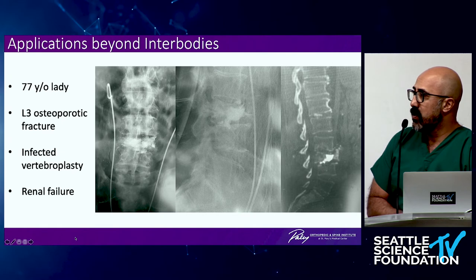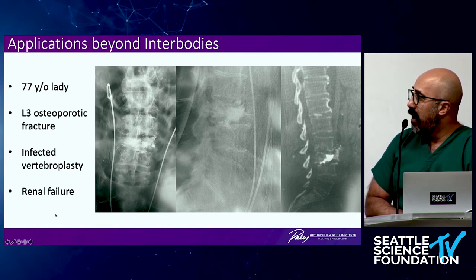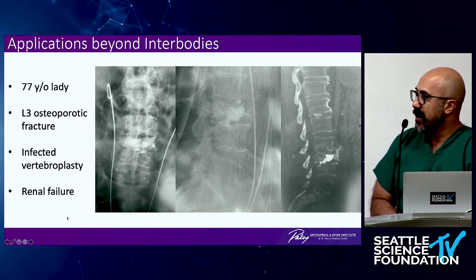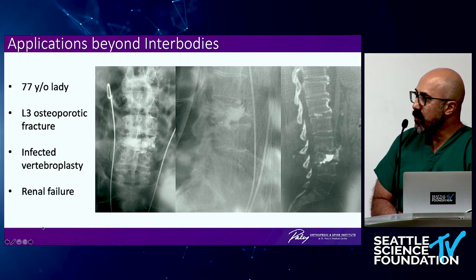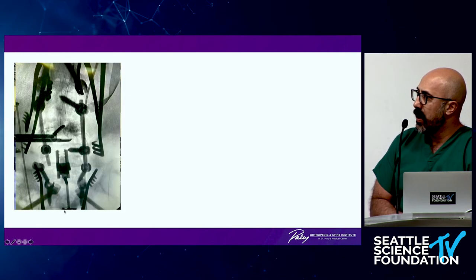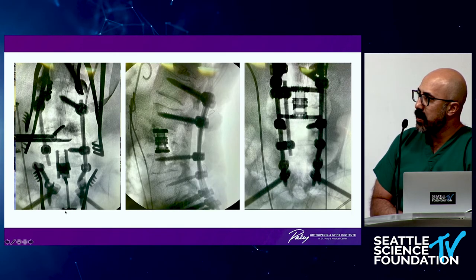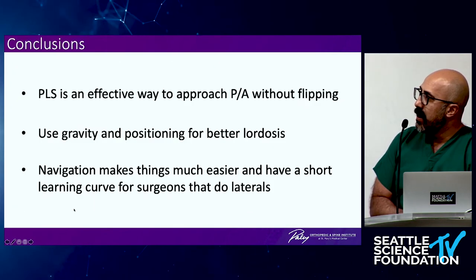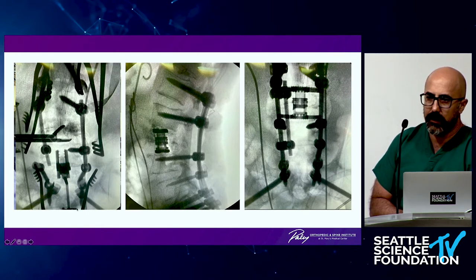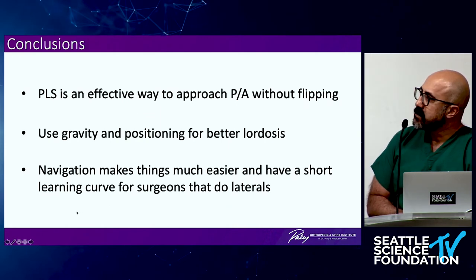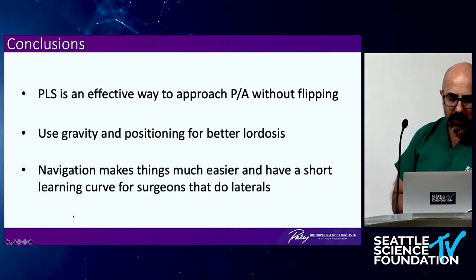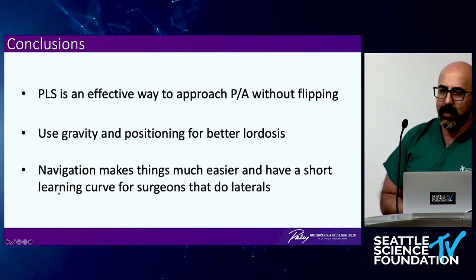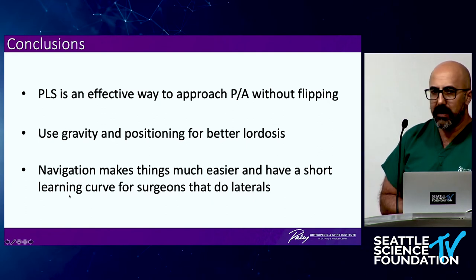Taking this to the next level — here's a corpectomy case where the patient has an infected kyphoplasty with significant collapse, ureteral stents, and multiple previous surgeries. We went in through a prone approach to remove the cement and perform a corpectomy. Due to severe osteoporosis we extended to the sacrum. It's an effective way to approach the patient — gravity and positioning really help — and I think navigation is probably the most distinguishing part of my approach to these cases.